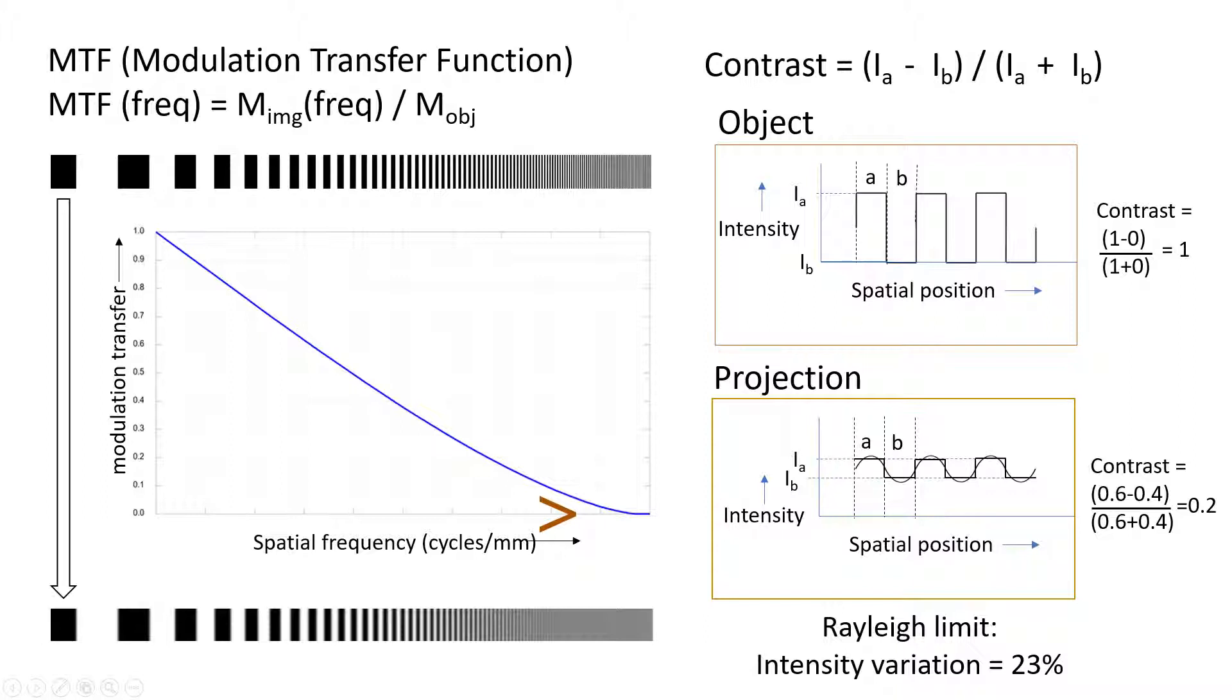A nice way to visualize the MTF is to look at contrast. MTF and contrast are not the same thing, but they are very closely related. So, changes in contrast can easily be calculated by comparing the intensity differences in the areas in the graphs A and B, which are the high and low intensity areas. And if you compare the original object pattern with the average intensities in the projection image, you can calculate this decrease in contrast.